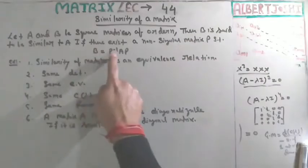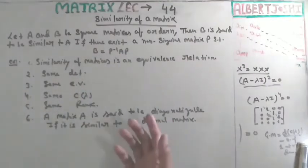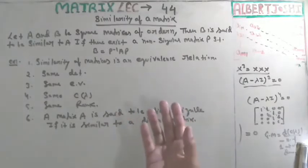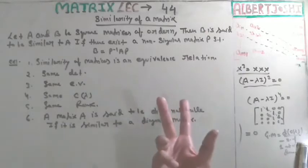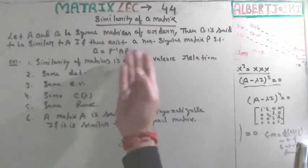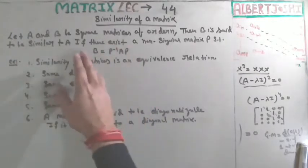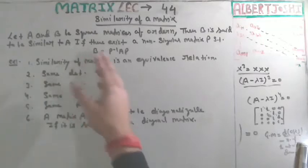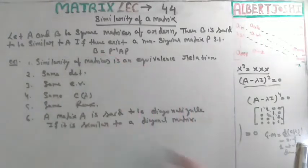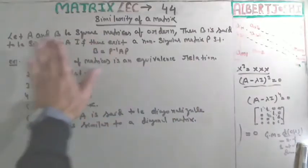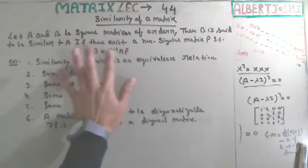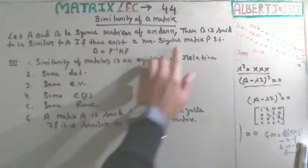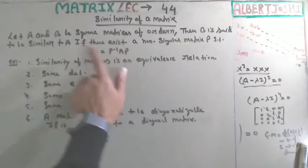Such that B is equal to P inverse A P. If you study the diagonalization of a matrix, you will get something related — the matrix must be diagonal. You have two matrices A and B; both matrices will be similar if you have any such non-singular matrix P and you can write B in this form.